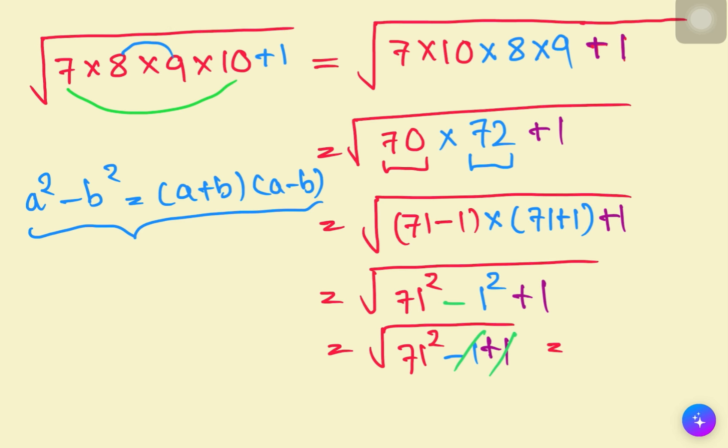So we have the square root of 71 whole squared, which equals 71. Therefore, 71 is the correct solution.